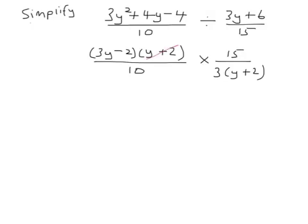So y plus 2 divided by y plus 2 is 1. 15 divided by 10 is the same as 3 divided by 2. And then we've got 3 divided by 3 which is simply 1. So this whole thing simplifies to 3y minus 2 divided by 2. And that's that simplified.